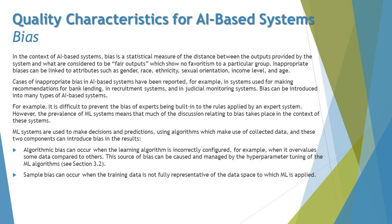In the context of AI-based systems, bias is a statistical measure of the distance between the outputs provided by the system and what are considered to be fair outputs, which show no favoritism to a particular group. Inappropriate biases can be linked to attributes such as gender, race, ethnicity, sexual orientation, income level, and age — attributes which AI-based systems can find difficult to differentiate fairly. Cases of inappropriate bias have been reported in systems used for banking and bank lending recommendations, recruitment systems, and judicial monitoring systems.